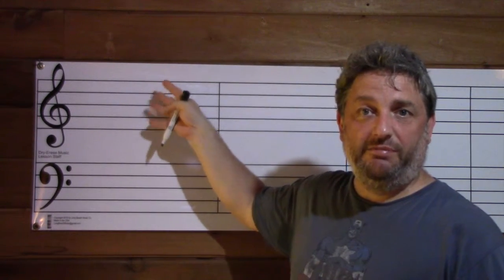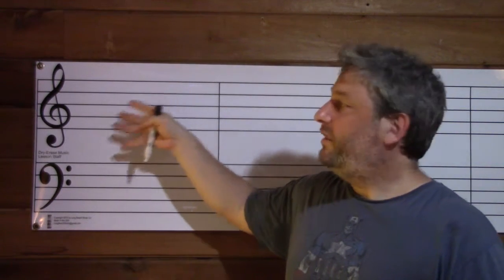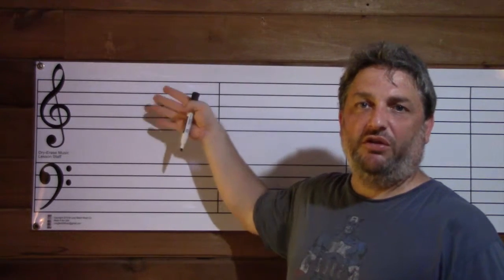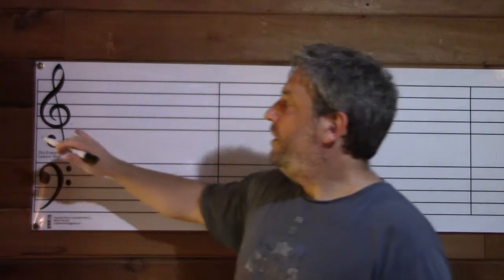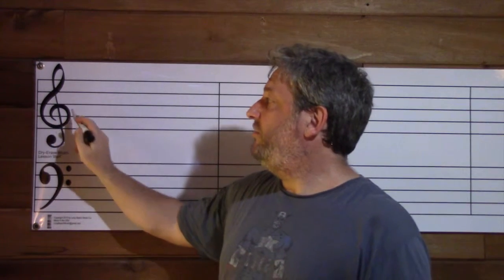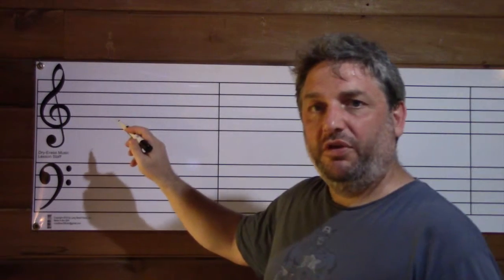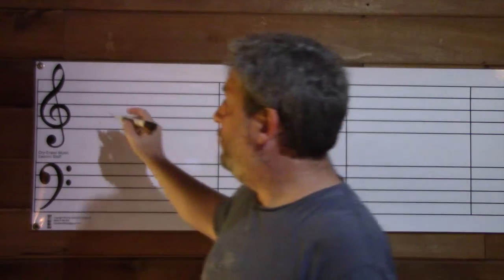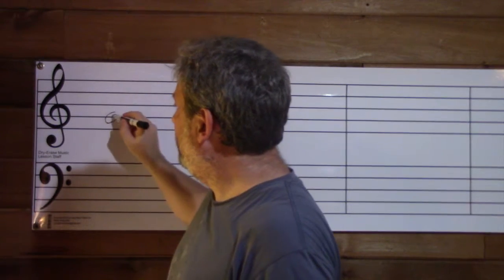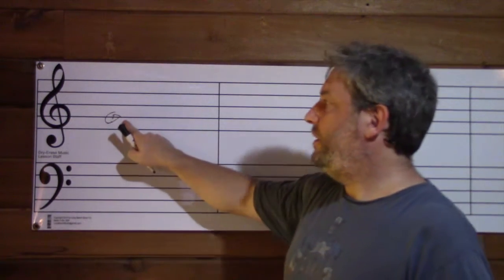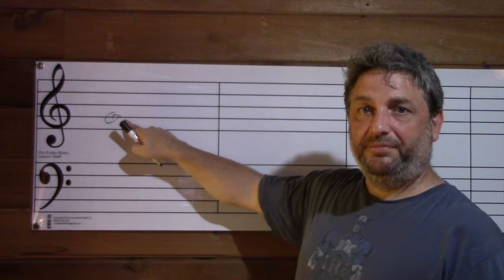This tells us where notes are on our staff, because we can change the lines and spaces to suit what we need them to suit. However, the G clef is going to tell us where the notes are for this particular staff. The G clef is called a G clef because you see this little curly cue at the bottom there? That circles the line that the note G resides on, so G would be on the second line from the bottom.